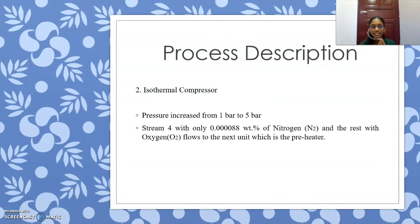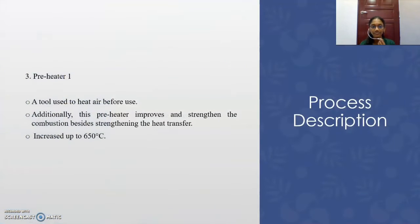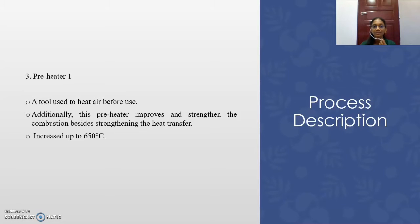The next unit is the isothermal compressor, which increases pressure from 1 bar to 5 bar. Stream 4 with only 0.0008% nitrogen and the rest oxygen flows to the next unit, which is preheater 1. Just like its name, it is a tool used to heat the air before use. This preheater imposes and strengthens the combustion and heat transfer, increasing the temperature up to 650 degrees Celsius.